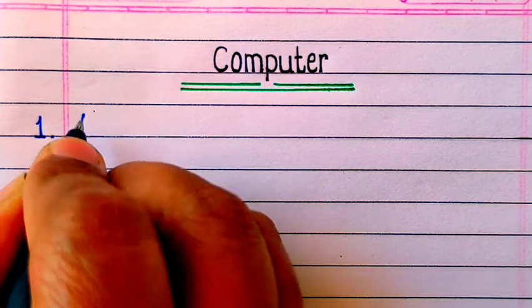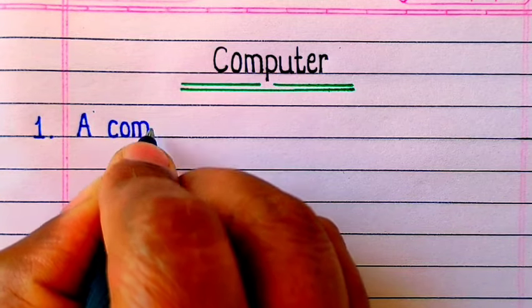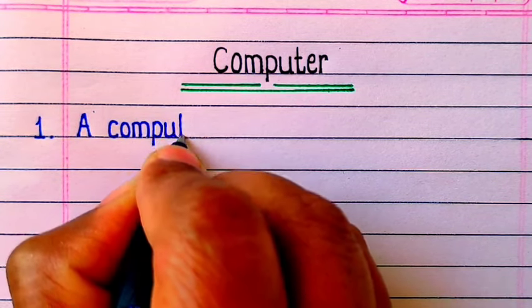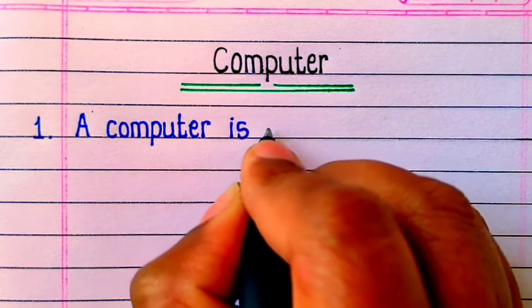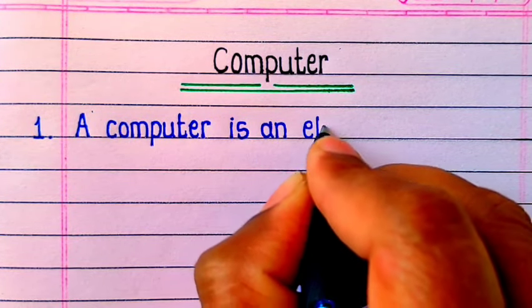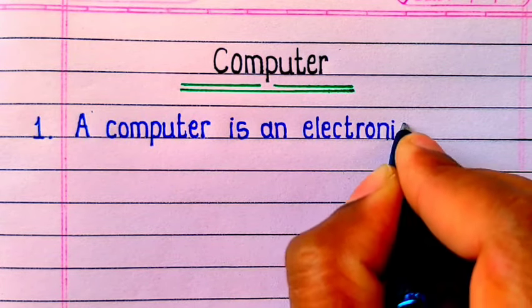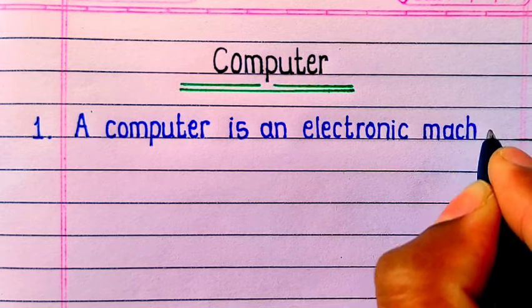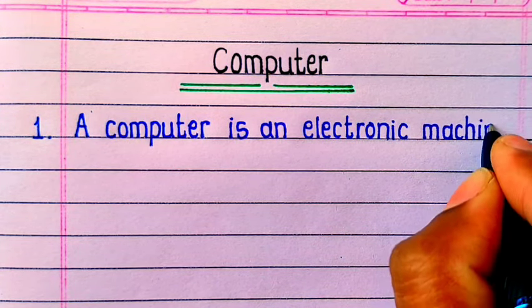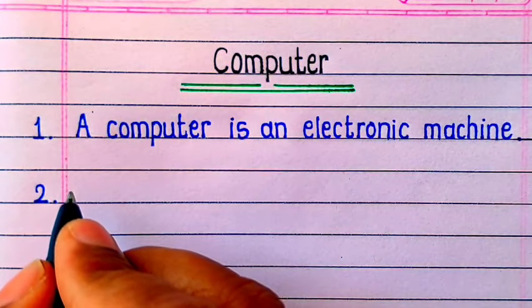Computer. First line: A computer is an electronic machine.